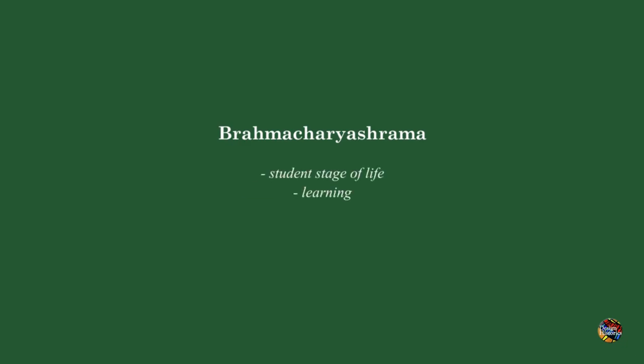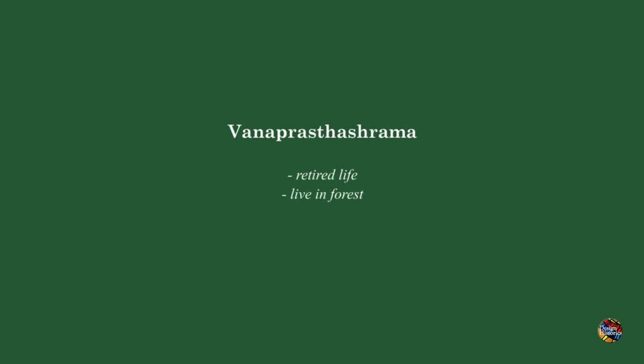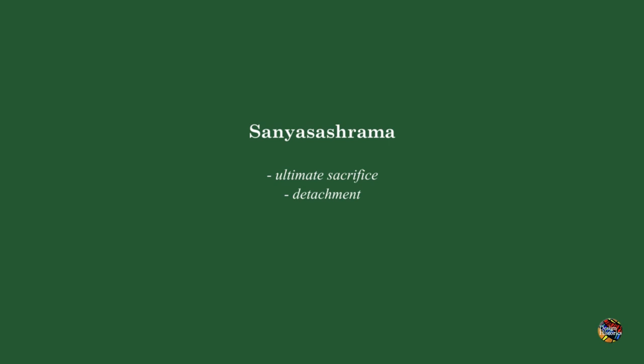The Ashrams were basically a way of life. First is Brahmacharya Ashram — the student phase of life, where a person was expected to learn as much as he could. Second is Gruhasthashhram, the household life which starts after marriage, where earning a living and carrying out religious rituals like Yadnyas was mandatory. Third is Vanaprasthashhram, which is like retirement — a person hands over responsibilities to the next generation and goes to live in the forest. The last is the Sanyas Ashram, the ultimate sacrifice, where one leaves everything, gives up all material possessions, declares himself dead through certain rituals, and detaches completely from materialistic life.